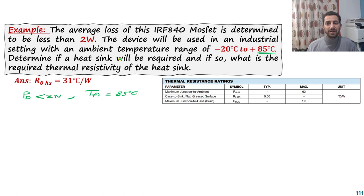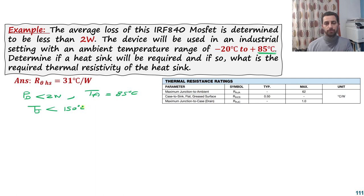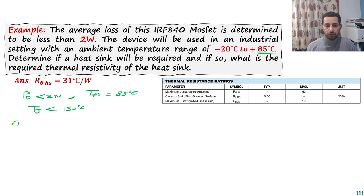Determine if a heat sink will be required, and if so, what is the required thermal resistance of the heat sink. We need to check whether the junction temperature will exceed 150°C. The junction temperature must be kept at 150°C or below. I will now calculate using the electrical thermal model. If the junction temperature exceeds 150°C without a heat sink, that means a heat sink is needed.